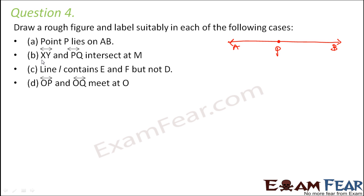XY and PQ intersect at M. So you have one line as XY. You have another line as PQ. And the question says that both of them intersect at M. So that means the point of intersection is M.